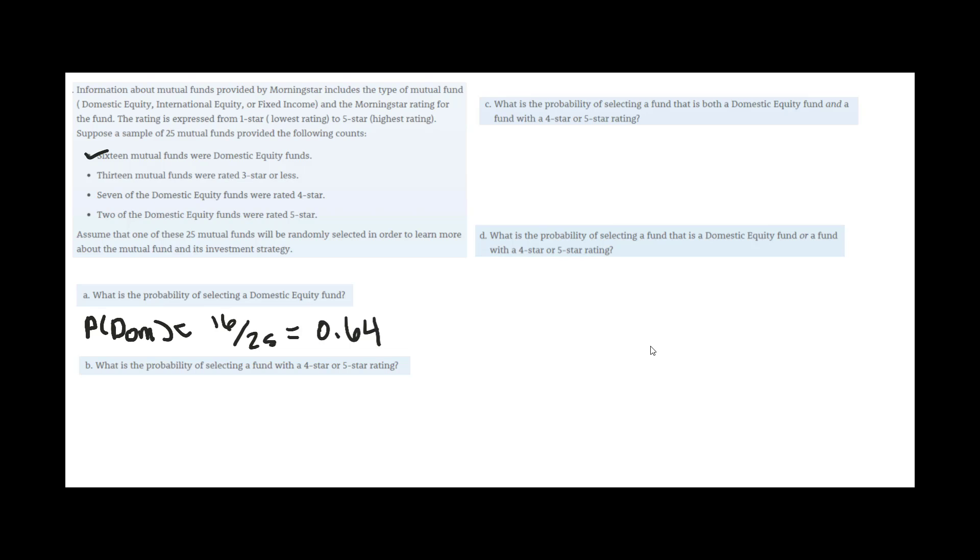Then it says what is the probability of selecting a fund with a 4 star or 5 star rating? This is where you learn how to use complements. It said 13 were rated 3 star or less. So the probability of a 4 or 5 would be 1 minus the probability 3 or less.